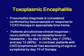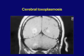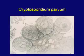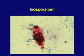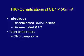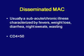At CD4 count less than 50, infectious complications include disseminated CMV retinitis and disseminated Mycobacterium avium complex (MAC). Disseminated MAC is associated with the end-stage AIDS picture from the 1980s — fevers up to 105-107°F, wasting syndrome, night sweats requiring multiple clothing changes, and severe diarrhea 20 times per day. The CD4 count is typically less than 50, and the organism is acid-fast.